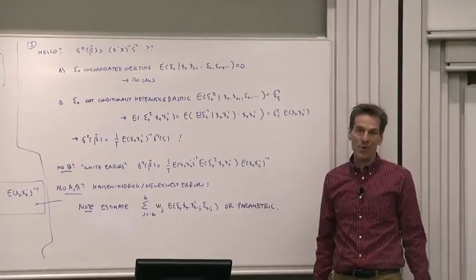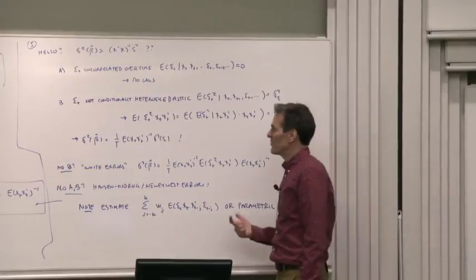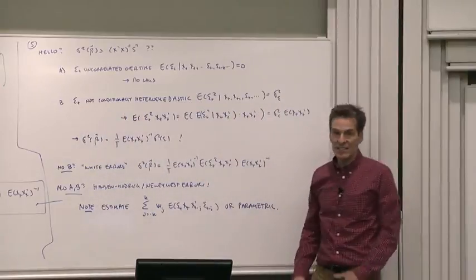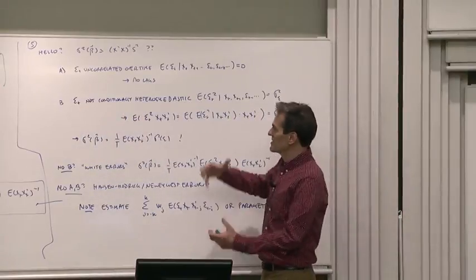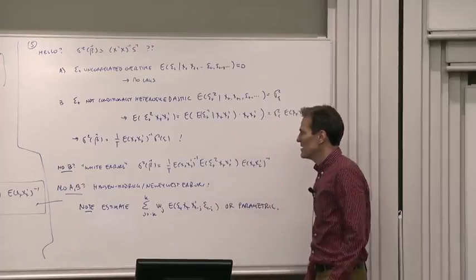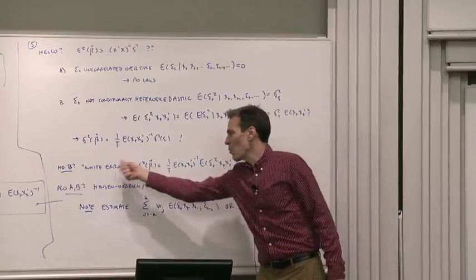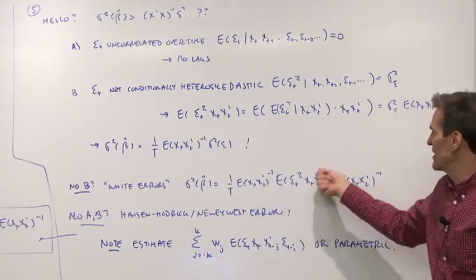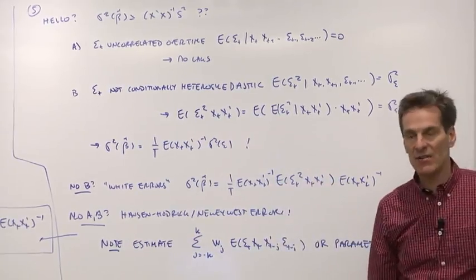But you don't have to do that anymore. This, in fact, gives you a useful formula. Suppose you don't think the epsilons are homoscedastic. Sometimes the epsilons have higher variance than at other times. Now we have a formula, white standard errors, that correct OLS for potentially conditionally heteroscedastic error terms.